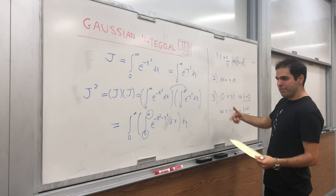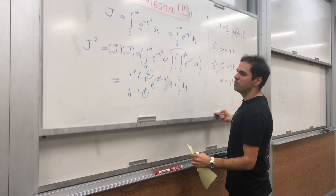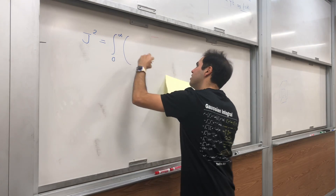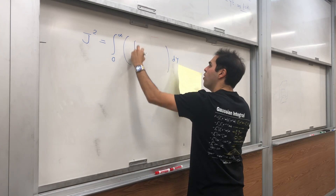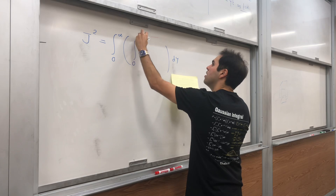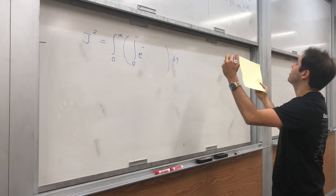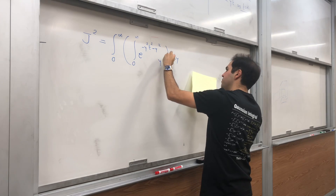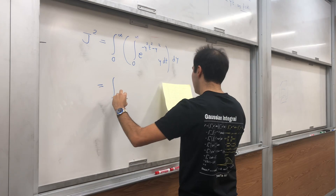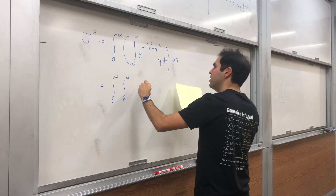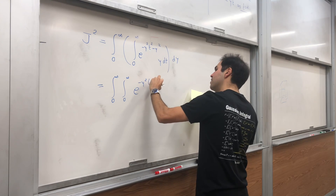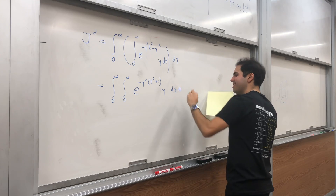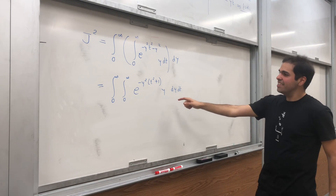Those are our three steps of the substitution. Now we substitute: J squared equals the integral from 0 to infinity of the integral from 0 to infinity of e to the negative (y squared t squared plus y squared), times y dt dy. We can rewrite the exponent as negative y squared times (t squared plus 1), and apply Fubini to swap the order of integration.